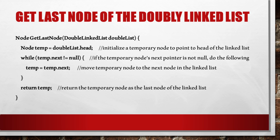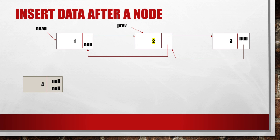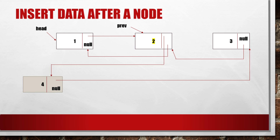If we want to insert a node in the middle of the linked list right after another node, for example inserting a node with value 4 after the node with value 2, we do the following: first point the new node's next pointer to the node right after node 2 (which is node 3), then point node 2's next pointer to the new node, then point the new node's previous pointer to node 2, and finally point node 3's previous pointer to the new node. The insertion is now complete.